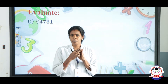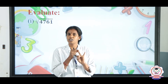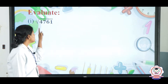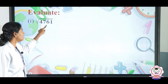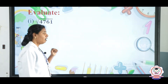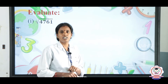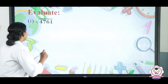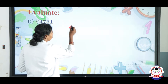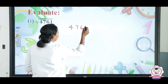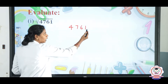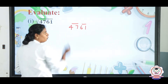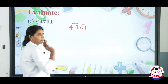We have already learnt the first 2 methods — repeated subtraction and prime factorization. Today we are going to learn about square root using the long division method. For example, the square root of 4761. The first step is to pair the numbers from the unit digit: we pair 4761 as 47 and 61.